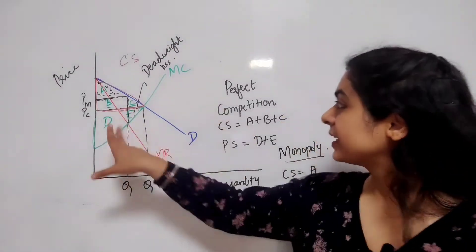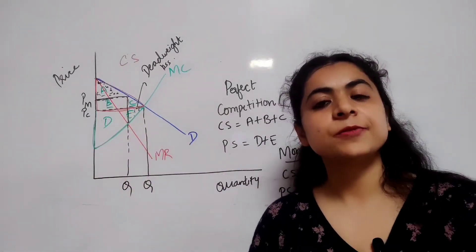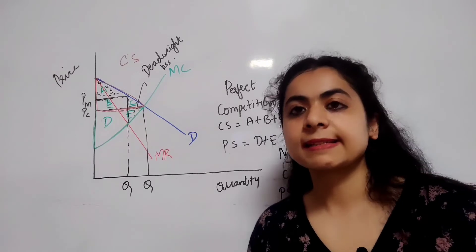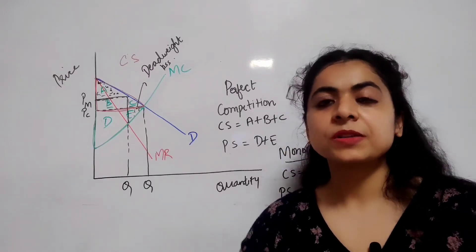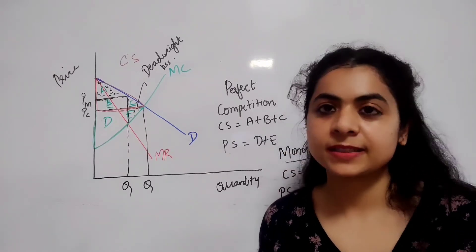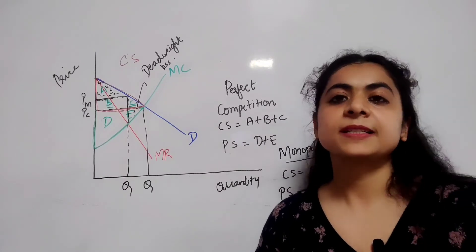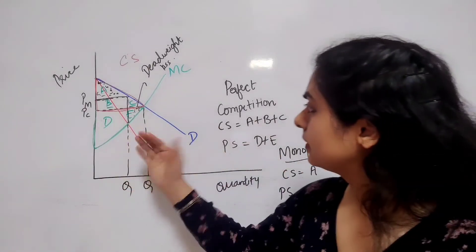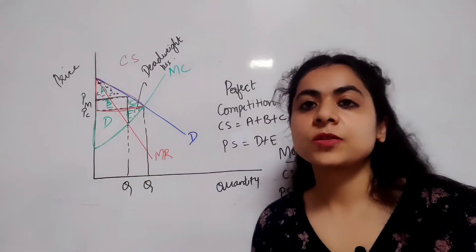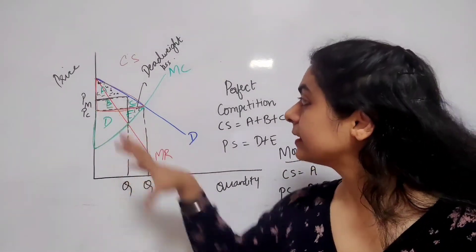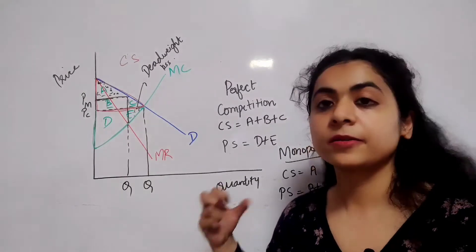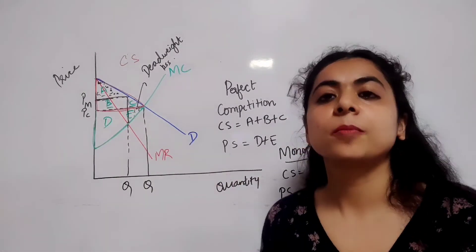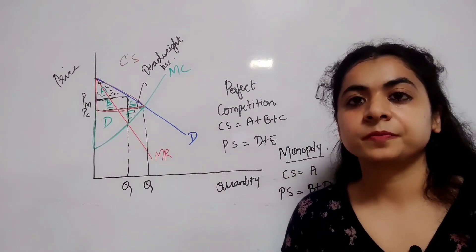This portion C plus E represents deadweight loss that is created as a result of the monopoly power exercised by the monopolist. Since the monopolist is looking for profit maximization and not for maximizing economic efficiency, the price charged by a monopolist is higher than that of a perfectly competitive market and output is less than in a perfectly competitive market.